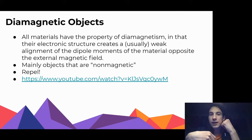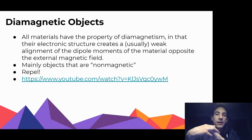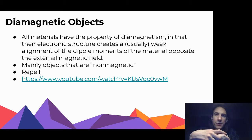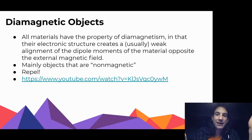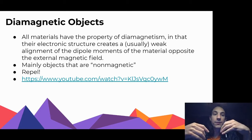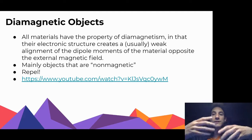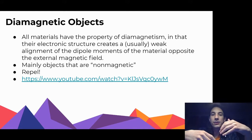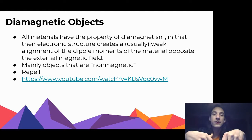The last type is diamagnetic. The way this works is very confusing. Diamagnetism is interesting because all materials have this property - the electronic structure can create a weak alignment of the dipole moments of the material opposite to the external magnetic field.